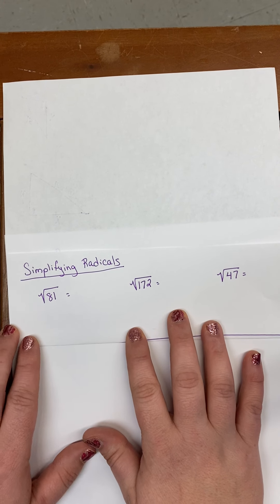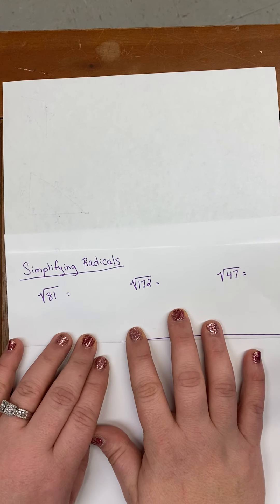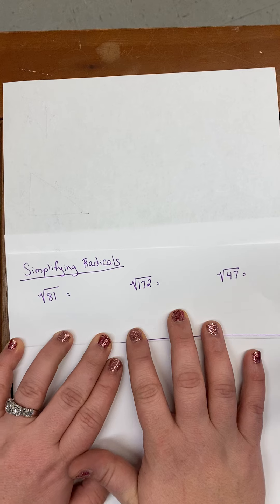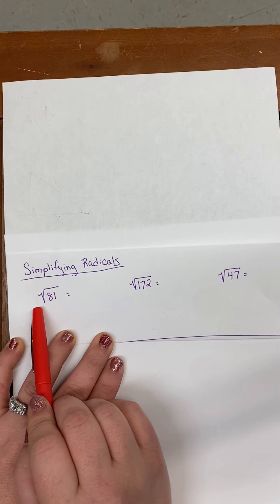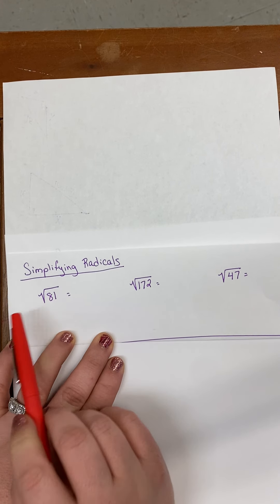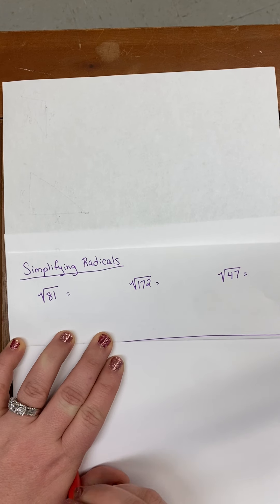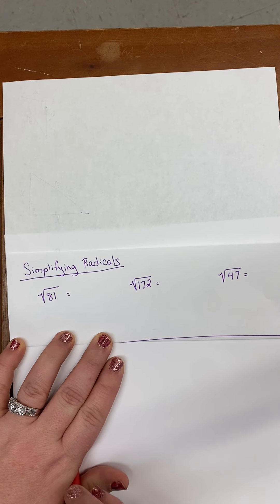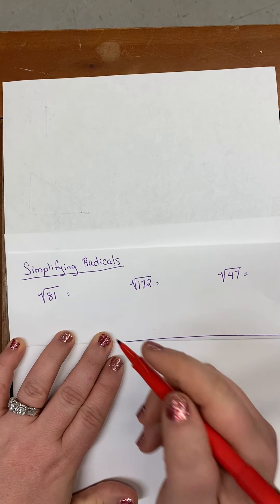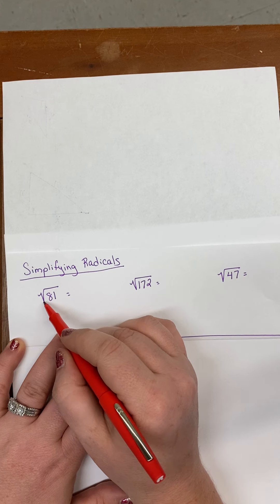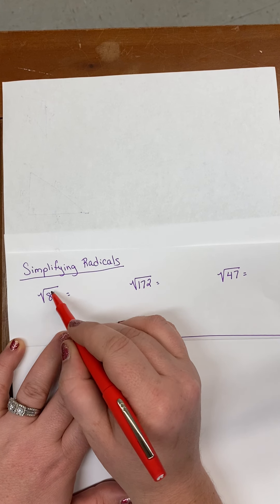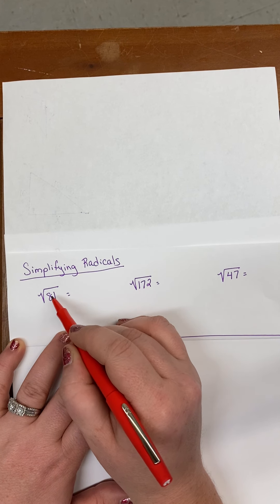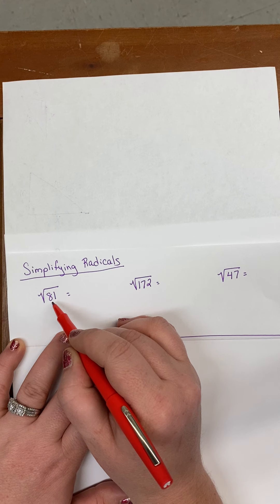Simplifying Radicals. A radical is the square root sign, basically. Most of us know it by that. Square root means we want to know whatever times itself is equal to what is underneath the square root sign.